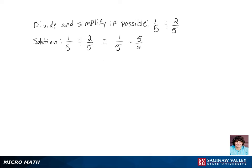Now we're going to multiply across the numerator and the denominator to get 1 times 5 over 5 times 2. We can cancel 5 off the numerator and the denominator, and we're left with 1 over 2, which is 1 half.